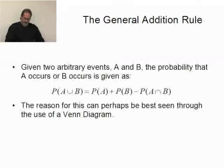The General Addition Rule—here's the idea. Given two arbitrary events A and B, the probability that A occurs or B occurs. Remember, joint probability was A and B. This is an or.